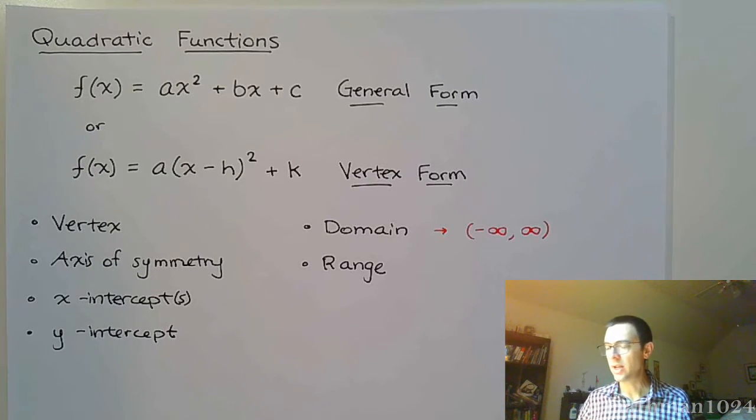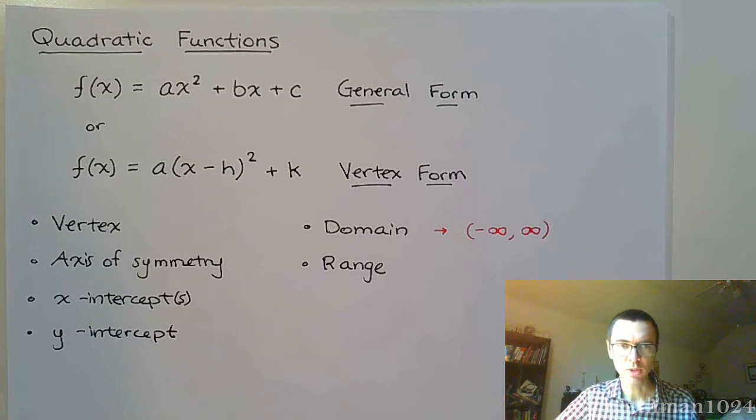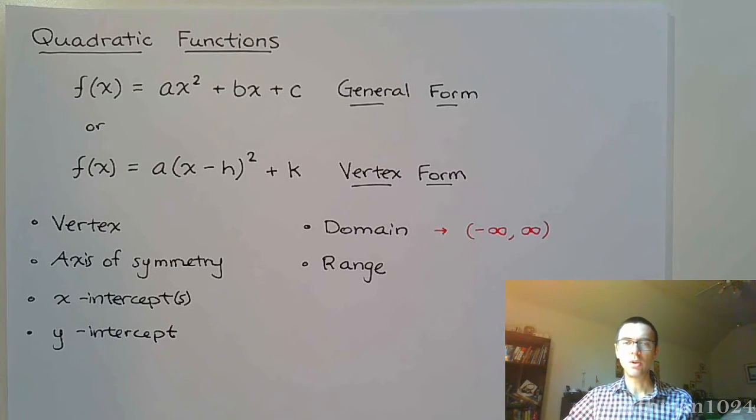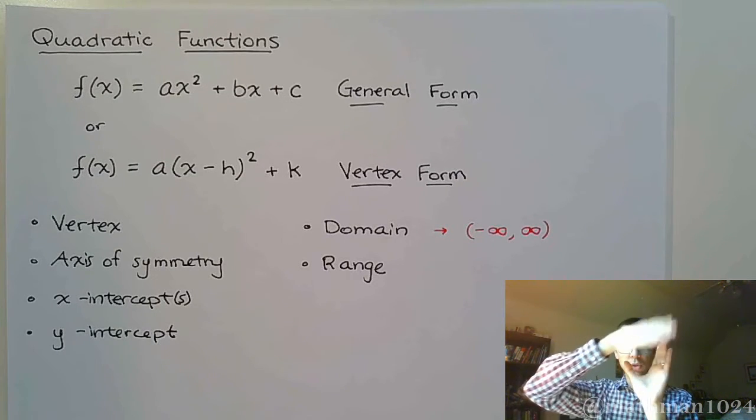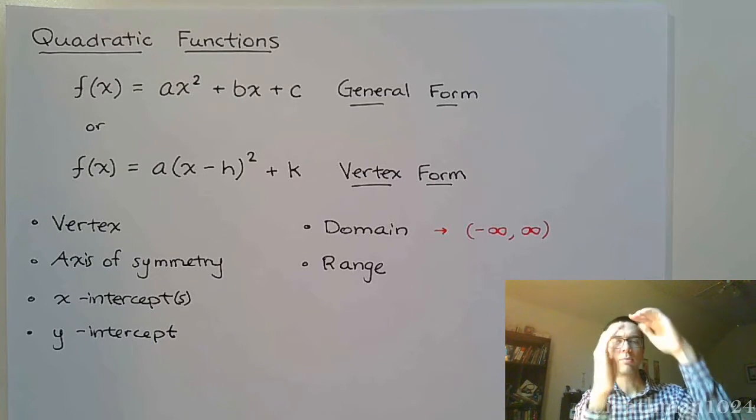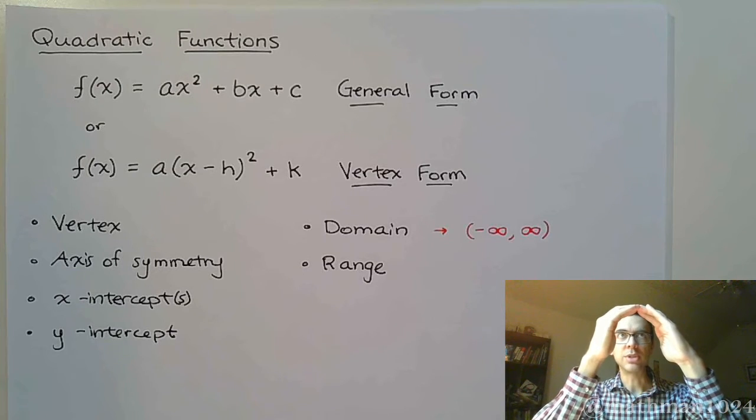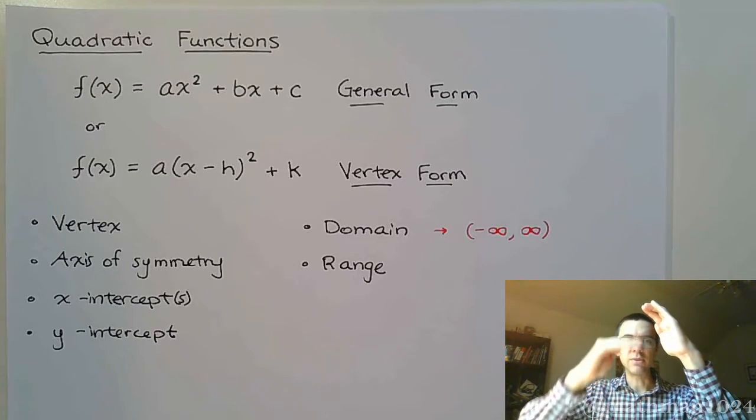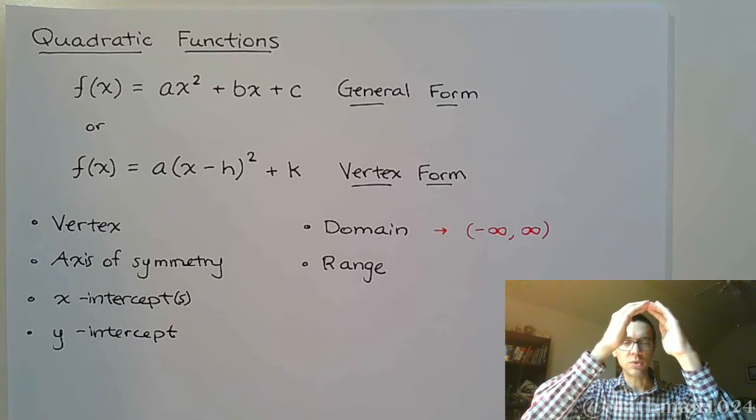The range is really going to be connected to the vertex, because wherever that vertex is, remember, your parabolas are going to look like this, little u-shaped things. So wherever your vertex is, if it opens up, it's going to be that y-value going to infinity. If you have a parabola that opens down, it's going to be negative infinity up to this y-value.